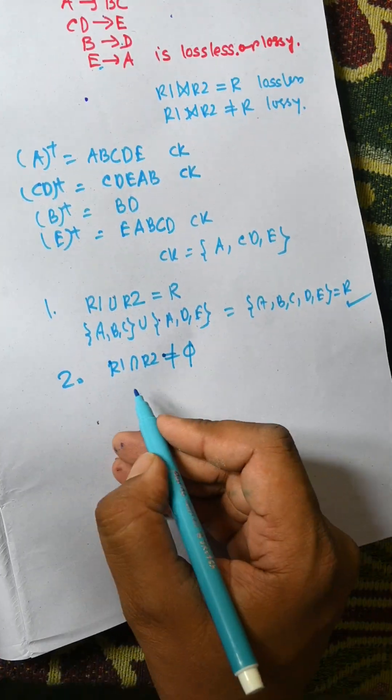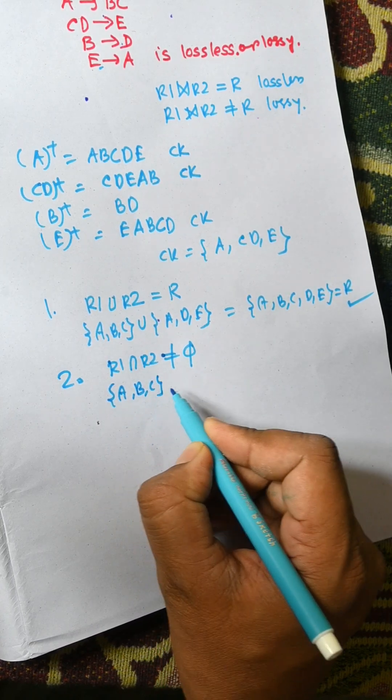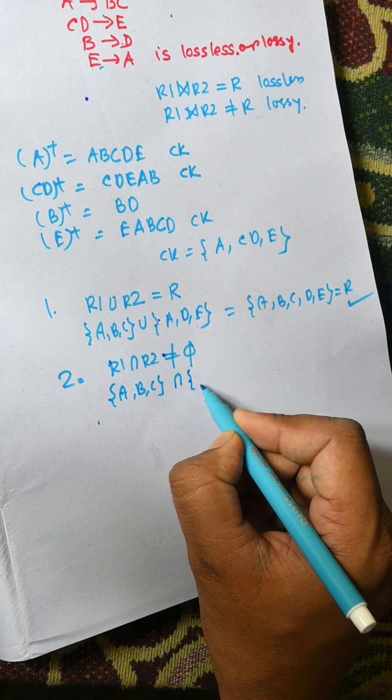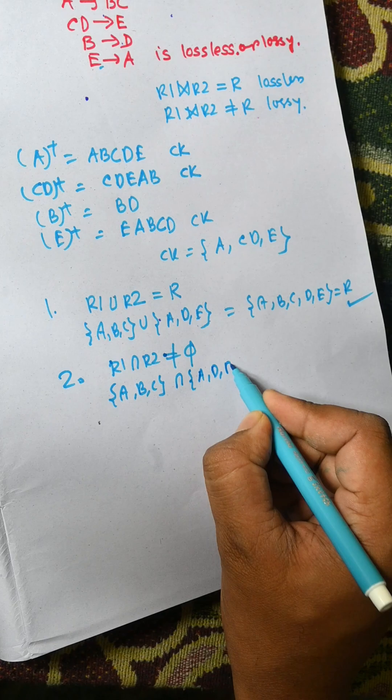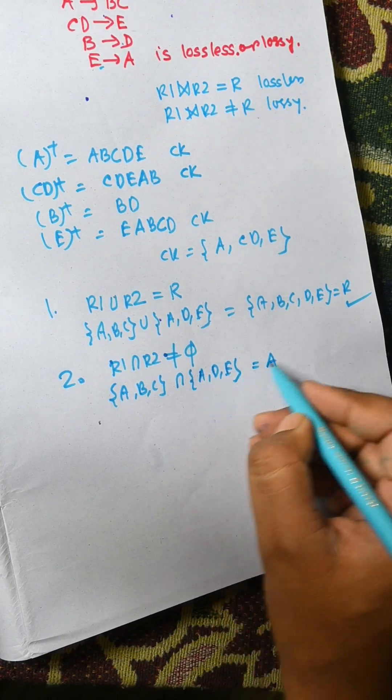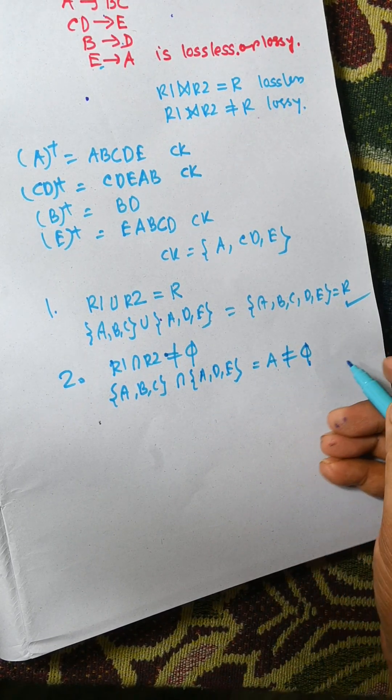Here R1, if we perform intersection between ABC and R2 that is ADE, we get A, that is not equal to phi. So rule 2 is also true.